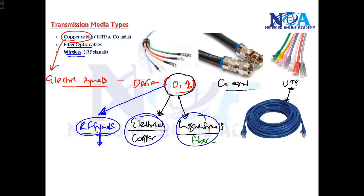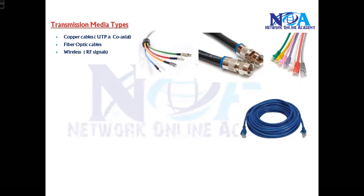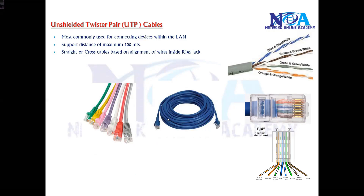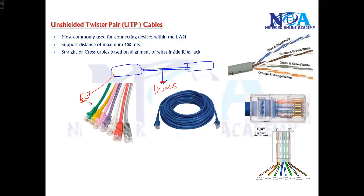We will talk more on wireless in a separate section. Starting with UTP cables — UTP are the most commonly used cables in a LAN, whether connecting computers to a switch, a switch to a router, or switch to switch. The default supported distance is 100 meters, maybe up to 120 meters. The distance between two devices should not exceed 100 meters, or the signal will drop and they may not communicate.